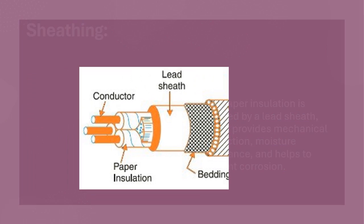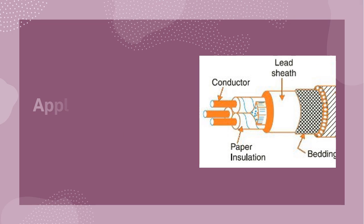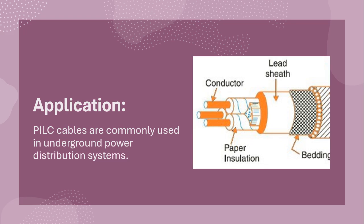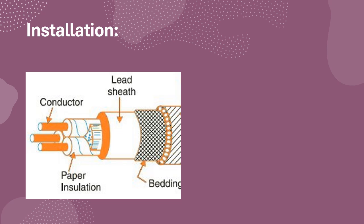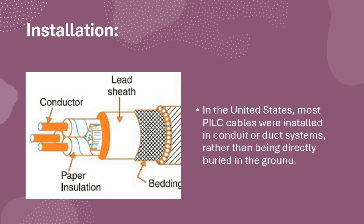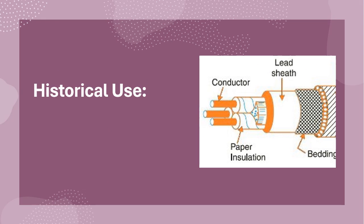PILC cables are commonly used in underground power distribution systems. In the United States, most PILC cables were installed in conduit or duct systems rather than being directly buried in the ground.